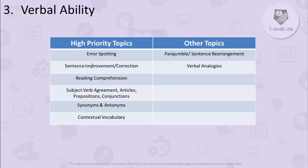For verbal ability, the important topics are: error spotting, sentence improvement and correction, reading comprehension, subject-verb agreement, articles, prepositions, conjunctions, synonyms and antonyms, and contextual vocabulary. Other topics include para-jumbles (sentence rearrangement) and verbal analogies. Verbal ability has two parts: one based on grammar rules and techniques (error spotting, subject-verb agreement, articles), and the second purely based on vocabulary (synonyms, antonyms, contextual vocabulary, verbal analogies).